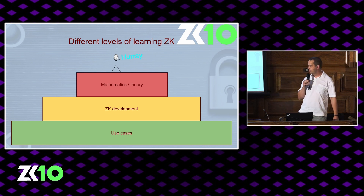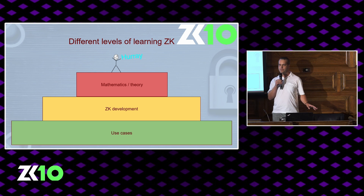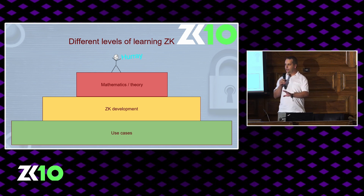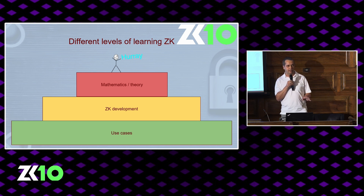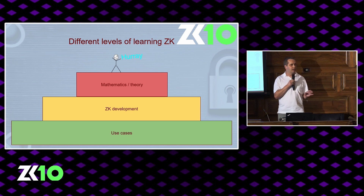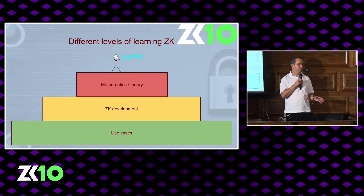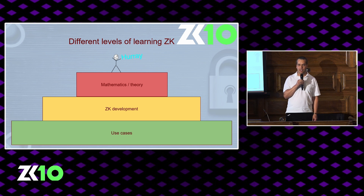I categorize learning into three different categories. Starting from the bottom, there's the use cases — this is what everyone basically learns first. You read what ZK is and what it can be used for: privacy, succinctness. Then there's the Alibaba cave example, the Where's Waldo example. That helps you understand something about what ZK is. Then if you want to go a step deeper, maybe you're a developer — you want to write some ZK stuff, check what languages there are, pick one, and write some ZK program. That's the next step, and still pretty easy.